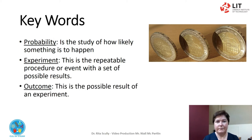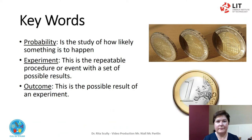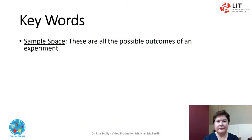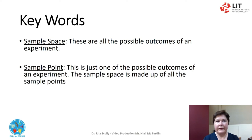Outcome: this is the possible results of an experiment. Sample space: these are all the possible outcomes of an experiment. Sample point: this is just one of the possible outcomes of an experiment. The sample space is made up of all the sample points.